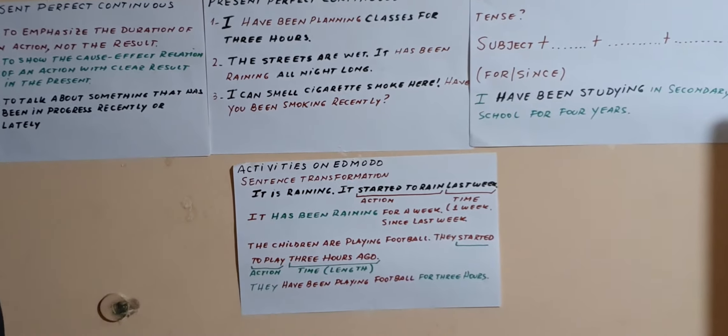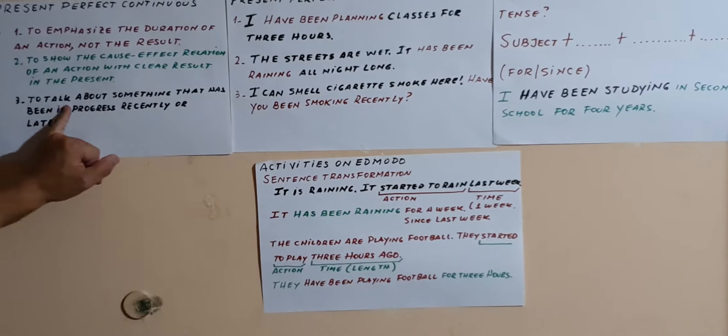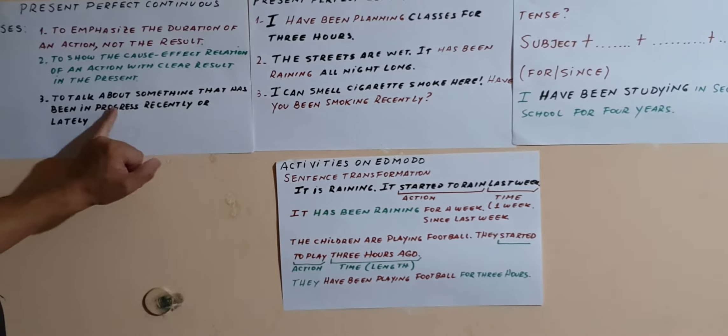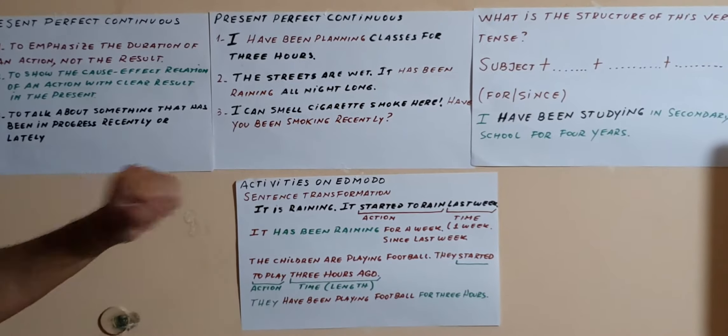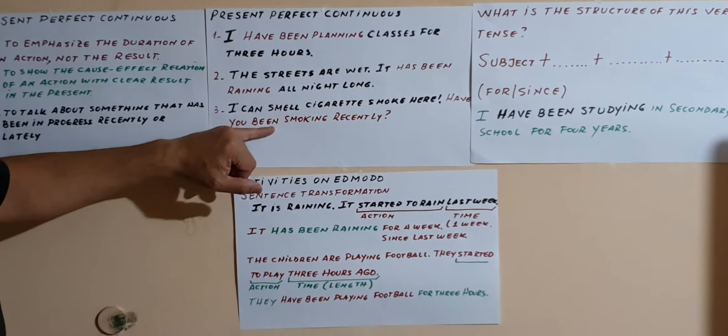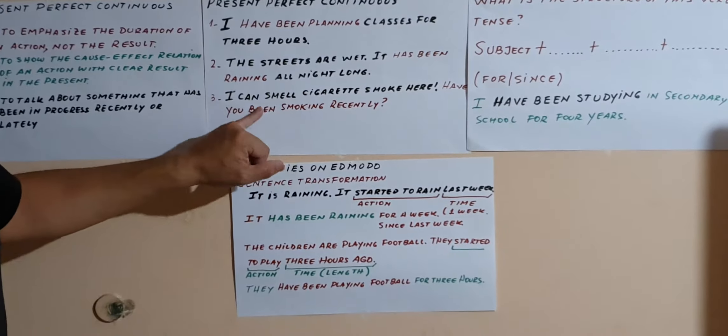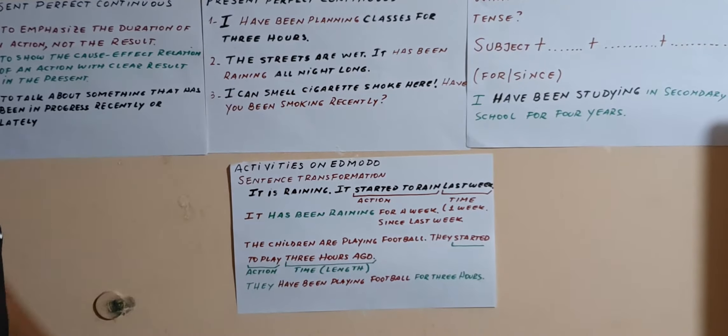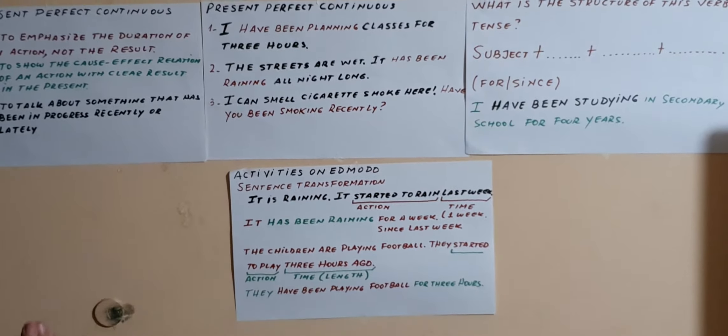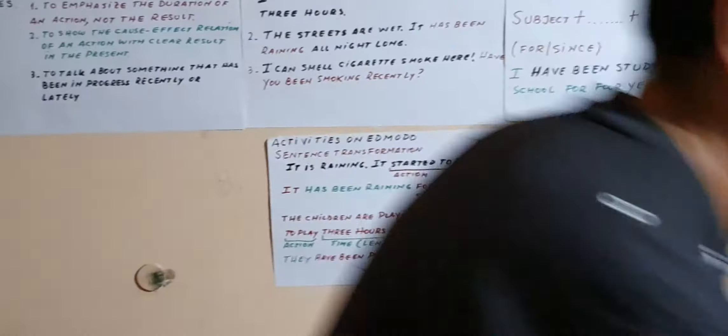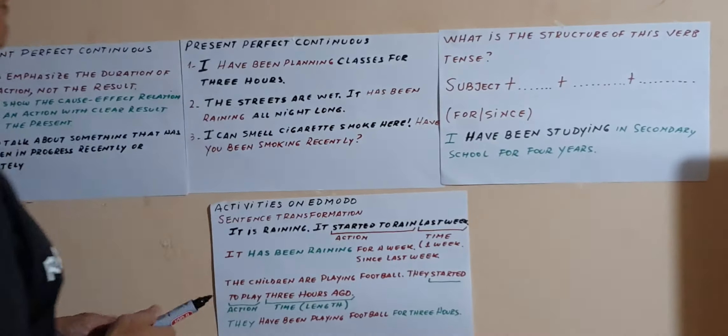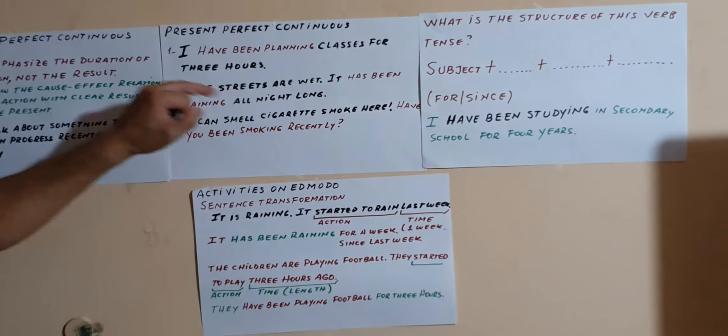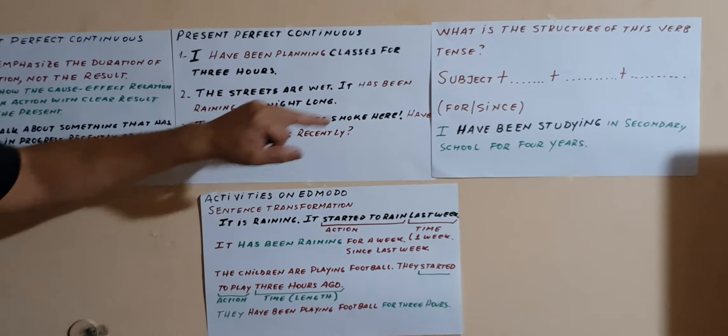Has been raining with -ing. Or I can smell - have you been smoking recently? So to talk about something that has been in progress recently: have you been smoking recently? Esa pregunta, fíjense, de nuevo tenemos have been smoking with -ing.